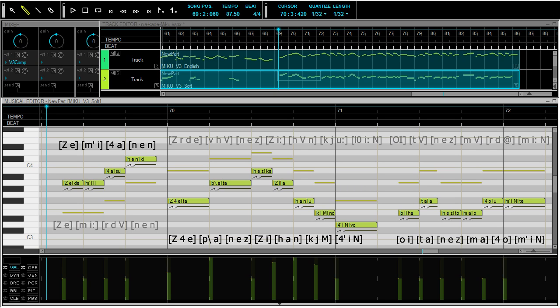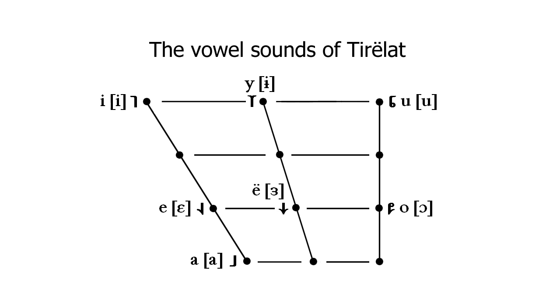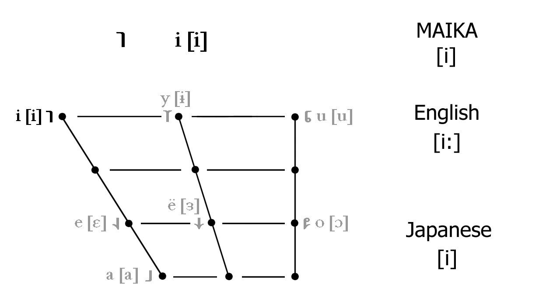I'll begin with the vowel sounds. Tirulat has seven vowel phonemes as shown in this chart. Let's start with E. This is the easiest vowel to produce. Maika and Japanese Vocaloids just use I, and English Vocaloids use I colon.